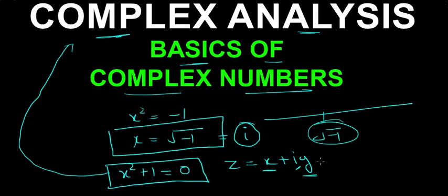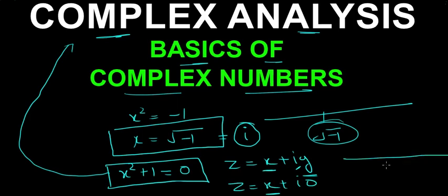If y is 0, then z becomes x plus iota times 0, which equals x. So we have represented real numbers in the form of complex numbers — real numbers also exist within complex numbers.